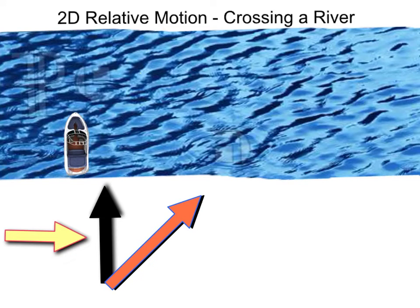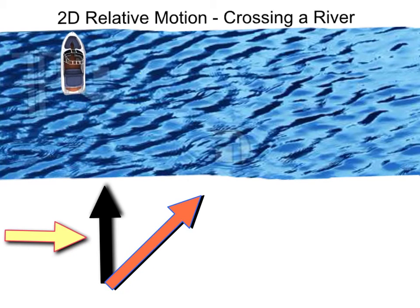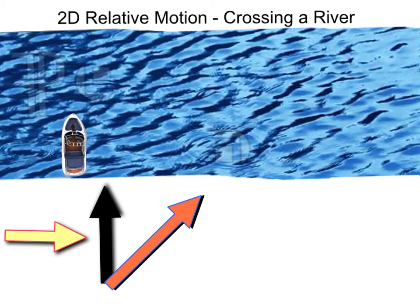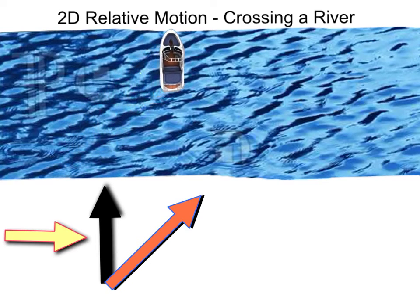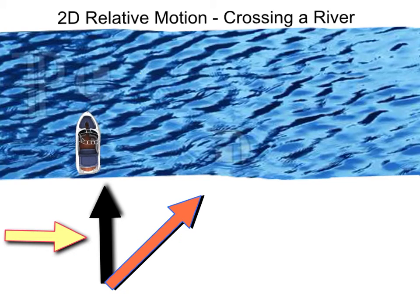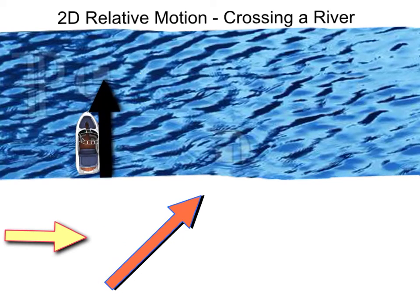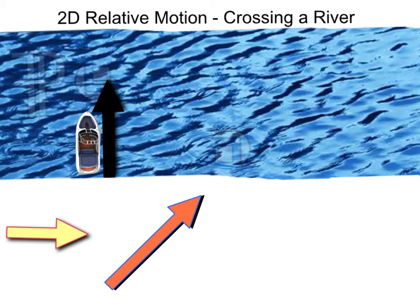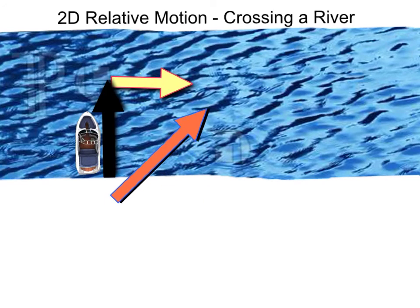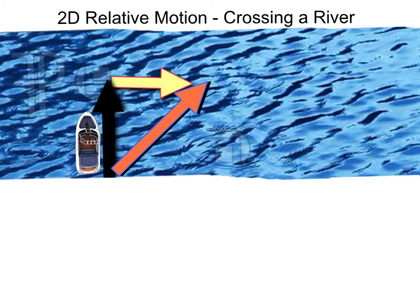Two-dimensional relative motion — crossing a river. Let's say you're in a boat and you want to get across the river. With no current, you could power right across and end up directly on the other side. But if there's a current pushing you downstream and you aimed your boat directly across, you probably would not end up directly across since the river would push you downstream by some amount. If we aim our boat directly across the river and the current is downstream to the right, the resultant motion of the boat would be a diagonal vector.